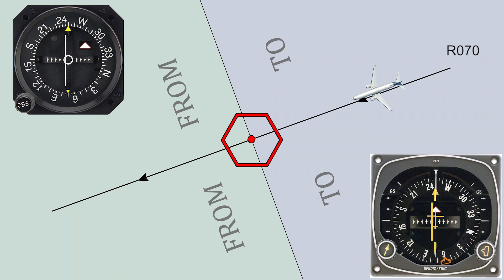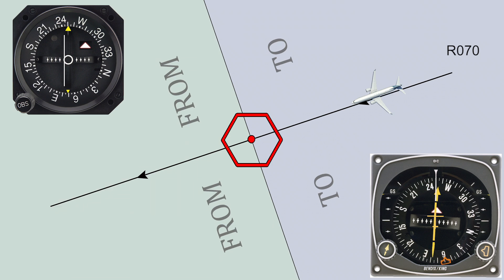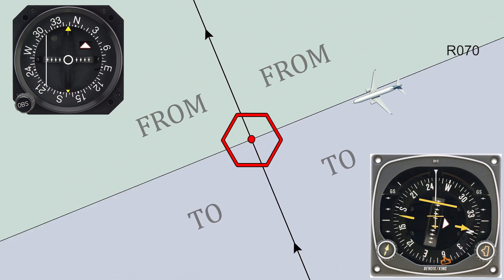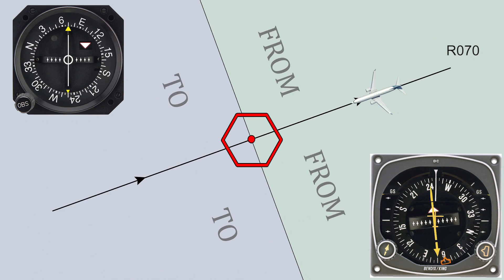When using CDI, double check your selected course because if you select the opposite course, in this example 070 instead of 250, the needle will still be centered when on proper course, but the indicator deviation from it will be wrong, meaning if you deviate to the right, the needle will also deviate to the right instead of left.